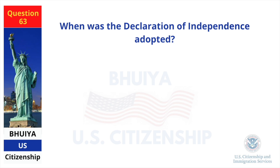When was the Declaration of Independence adopted? July 4, 1776.